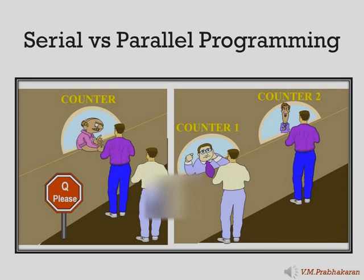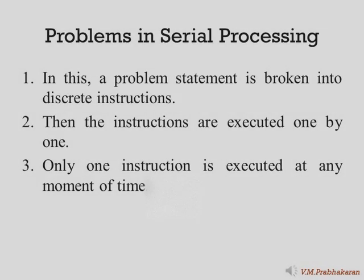Computer software was written conventionally for serial computing. This means that to solve a problem, the particular algorithm will get divided into smaller instructions. These discrete instructions are then executed on the central processing unit one by one — that is, one after another. Only after one instruction is finished will the next one start to execute. To compare with a real-life example: when two people are standing in a queue waiting for a movie ticket and there is only one cashier giving tickets one by one, the complexity increases when there are two queues but only one cashier available.